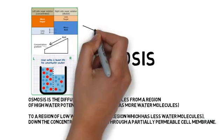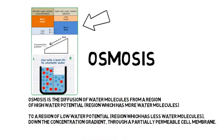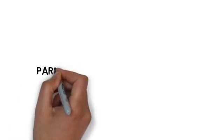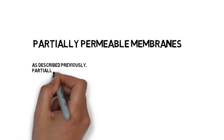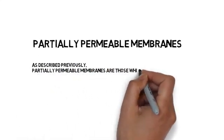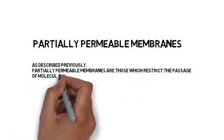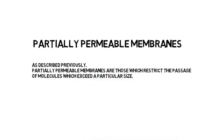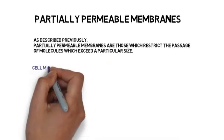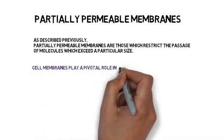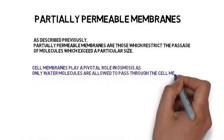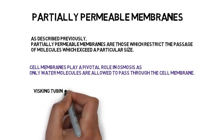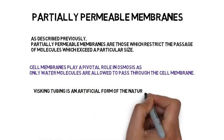Here is a diagram to explain. Partially permeable membranes. As described previously, partially permeable membranes are those which restrict the passage of molecules which exceed a particular size. Cell membranes play a pivotal role in osmosis as only water molecules are allowed to pass through the cell membrane. Visking tubing is an artificial form of the natural cell membrane.